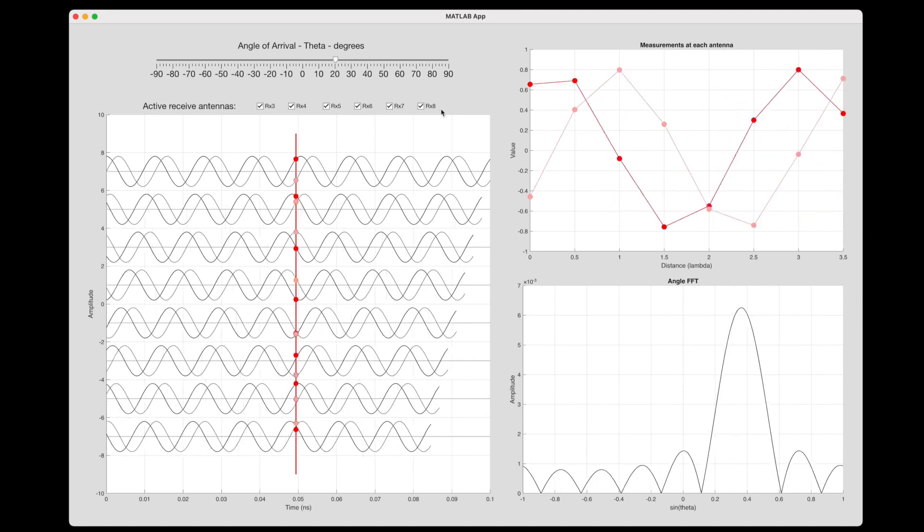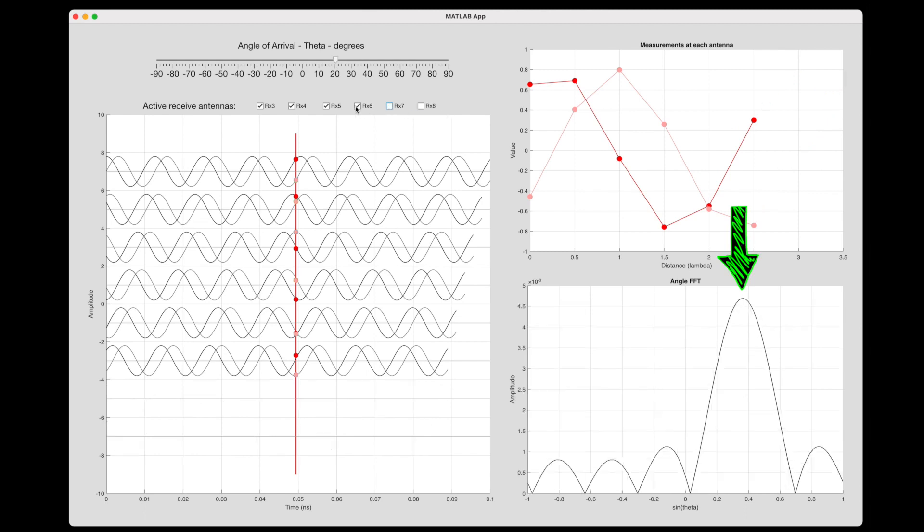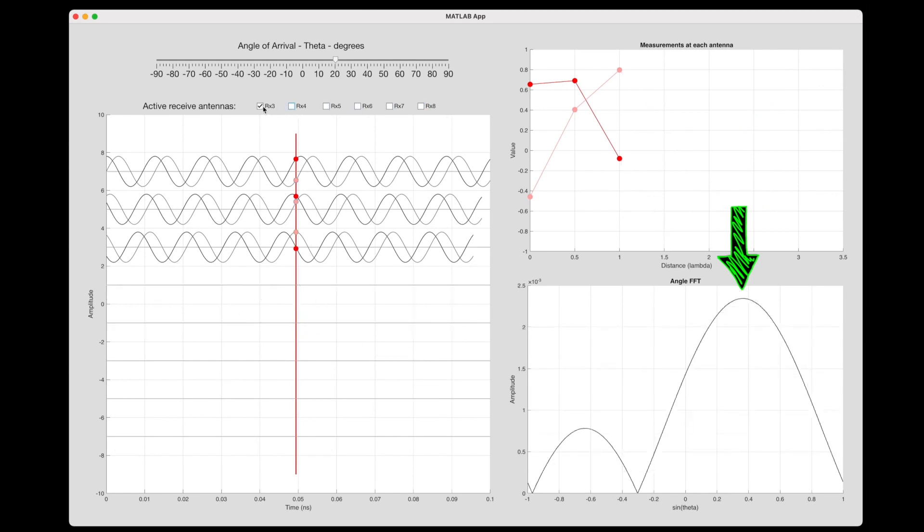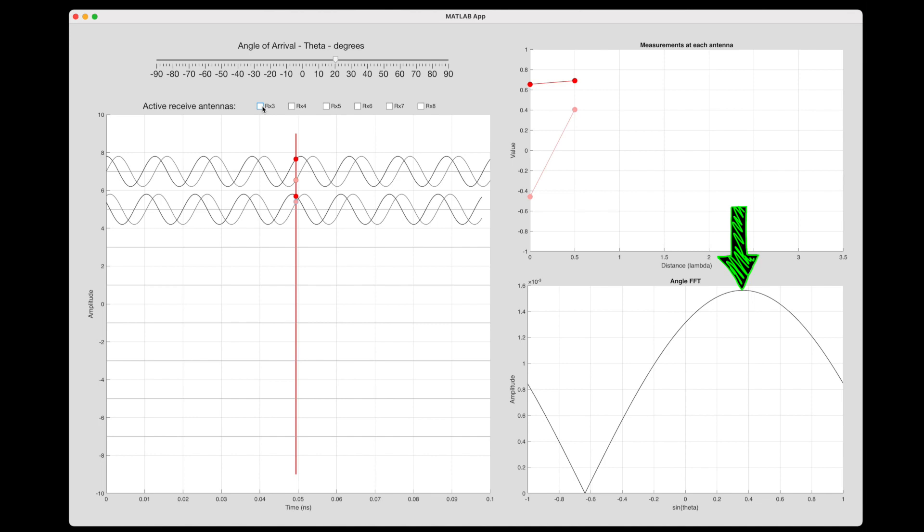Alright, so with all of this, where does resolution come in? Well, take note of how narrow this peak is with eight antennas. Now, as I remove antennas from the array, the peak stays in the same spot, indicating that the angle hasn't changed, but it gets wider with fewer antennas. And this wider peak is analogous to a wider receive antenna pattern. And with a wide receive pattern, you can't distinguish between two close objects. It'll look just like one, at least compared to the narrower peak. So we really want these narrow peaks in the FFT in order to get better resolution.